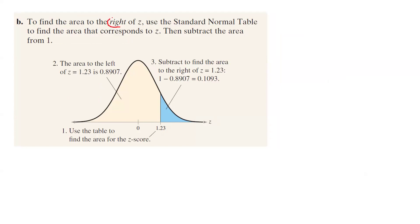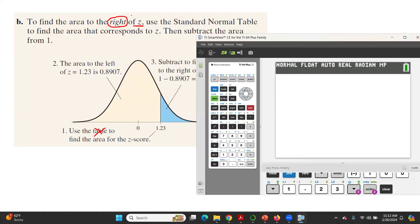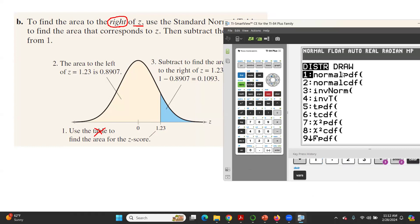The second scenario is finding the probability on the right-hand side of z. Suppose the area to the left of z = 1.23 is 0.8907, as we just calculated. Now find the area on the right-hand side of 1.23. We'll use the calculator — hit Second, VARS, and select normalcdf. Your lower bound is now 1.23.